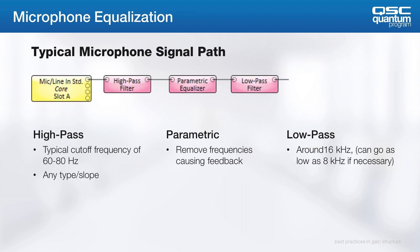Once we sample the mic signal, most integrators will apply some microphone processing to get the best overall performance. The most common mic processing combination seen in the field is high-pass filter, parametric EQ, and low-pass filter. The high-pass filter is used to remove low-frequency noise, typically set to 60 or 80 Hz. Parametric EQ is meant to remove frequencies that might cause feedback and equalize the natural response of the mic in the space. The low-pass filter is used to remove any unwanted high-frequency noise, and each will vary based on the application.